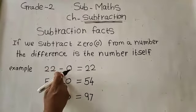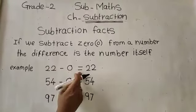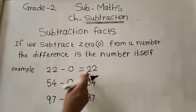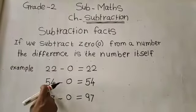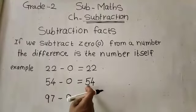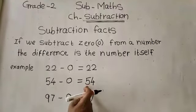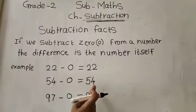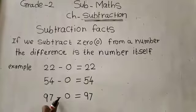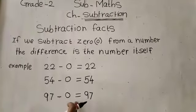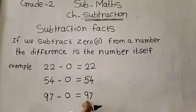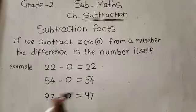To recap: 22 minus 0 equals 22, the number itself. 54 minus 0 equals 54, the number itself. And 97 minus 0 equals 97 — the difference is always the same number.